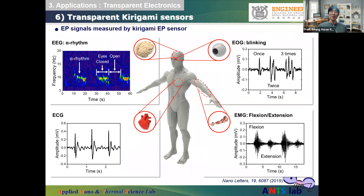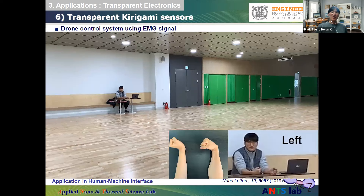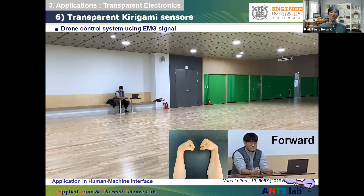Transparent and stretchable kirigami sensors were demonstrated to measure EEG (brain wave), EOG (eye blinking), ECG (heartbeat), and EMG (muscle movement). All data shown is real recorded data. As a practical demonstration, the transparent stretchable sensor was used to control a drone. Initially brain waves were intended for control, but they are too weak, so EMG muscle signals were used instead to control the drone.